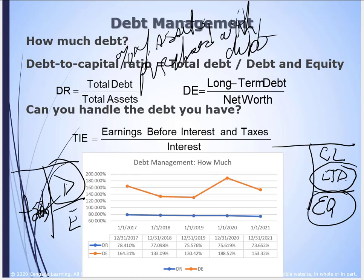Looking at Kroger across the board, roughly 75% of their assets have been purchased by borrowing. The next question is: how much of that debt was long-term compared to equity from owners? All figures are over 100%, and in the most recent year it's 153% — so if equity were $1,000, they would have roughly $1,500 in long-term debt. The bigger these numbers, the greater the risk to the company.